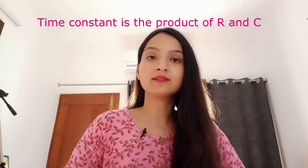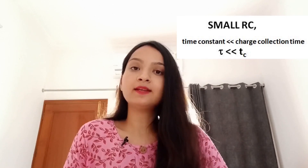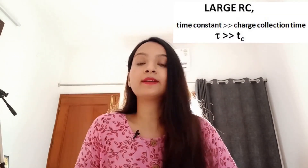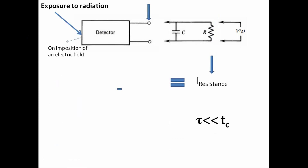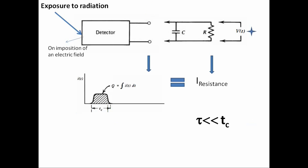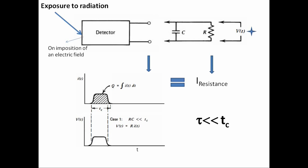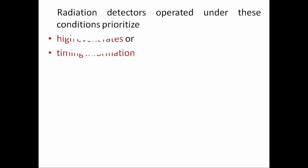The time constant tau equals R times C, the product of resistance and capacitance. Two cases arise: first, when the time constant is small compared to the charge collection time. In this case the current flowing through the load resistance is essentially equal to the instantaneous value of the current in the detector. The signal voltage produced has a shape nearly identical to the time dependence of the current within the detector. Radiation detectors are sometimes operated under these conditions where high event rates or timing information is more important than accurate energy information.